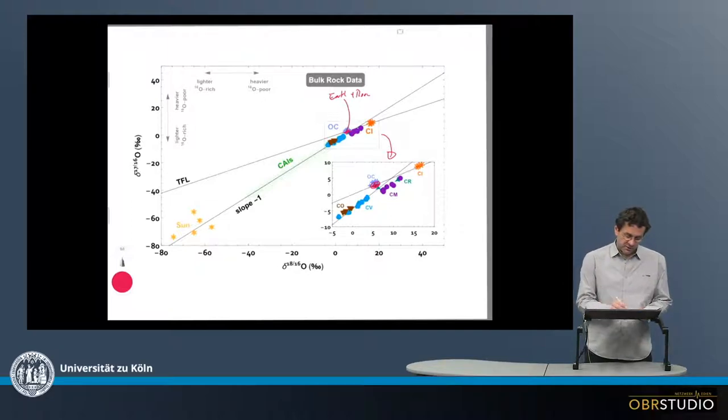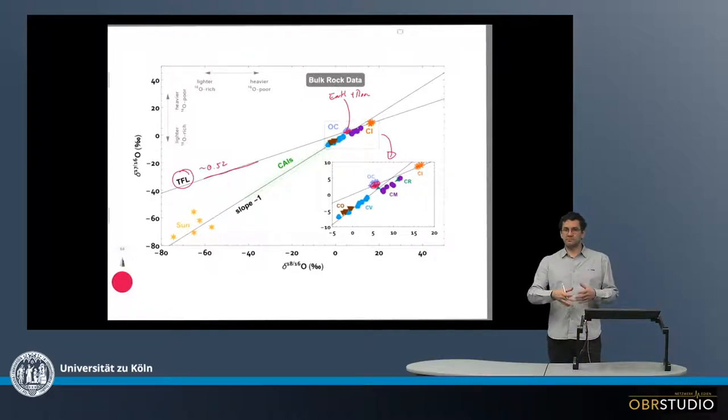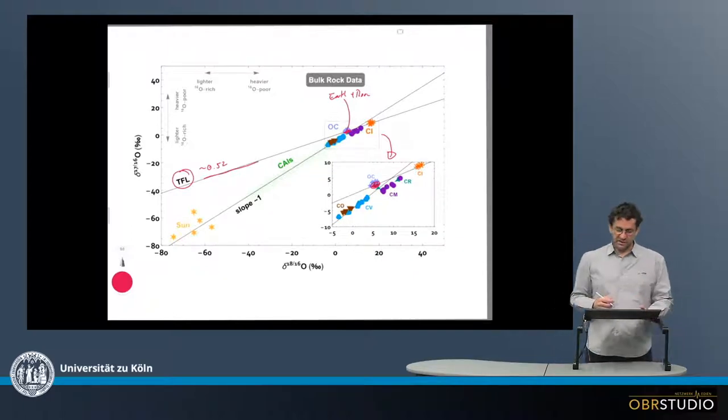Earth here plots on what is called a terrestrial fractionation line, with a slope of about 0.52. All the reservoirs on Earth, whether rocks or seas or lakes, plot on this line except for very few. Most plot on there and the reason is some kinetic mass-dependent isotope fractionation.